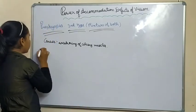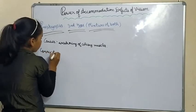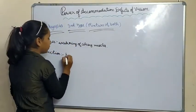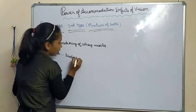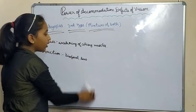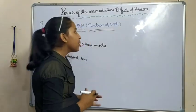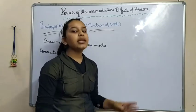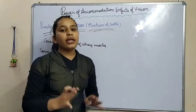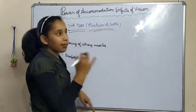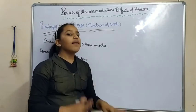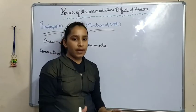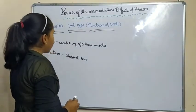Now we will see the correction of presbyopia. Presbyopia can be corrected by using a bifocal lens. A bifocal lens contains both a converging and a diverging lens — meaning it contains both a concave and a convex lens in one single lens. The upper part of the bifocal lens contains a concave lens and the lower part contains a convex lens. These are the corrections of presbyopia.